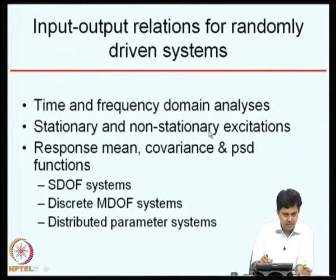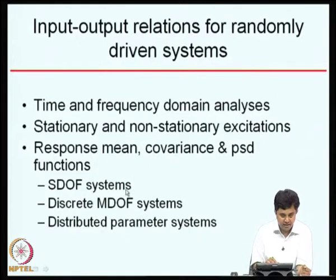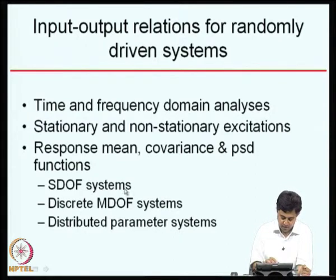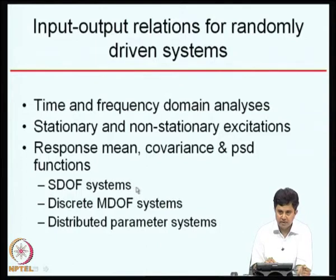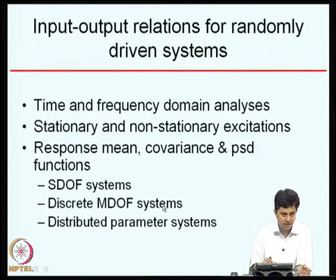We have considered stationary and non-stationary excitations. For stationary excitations, both time and frequency domain descriptions are possible. For non-stationary excitations, generally time domain description is possible. We have derived expressions for the mean of the response, covariance of the response, and power spectral density functions of the response. We have considered single degree of freedom systems, discrete multi-degree of freedom systems, and distributed parameter systems. For single degree of freedom systems, both the impulse response function and frequency response function are scalar functions. For discrete multi-degree of freedom systems, these become matrices — square matrices of impulse and frequency response functions.